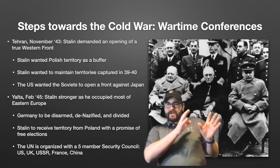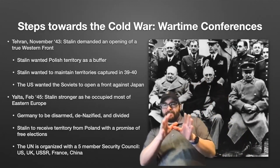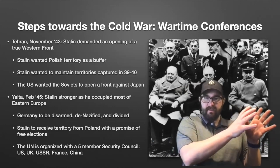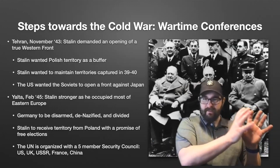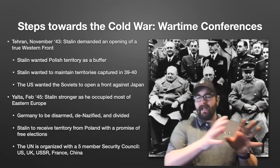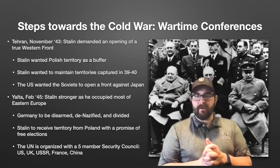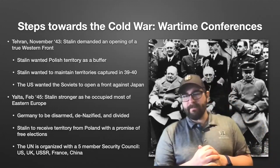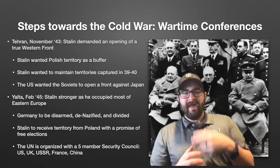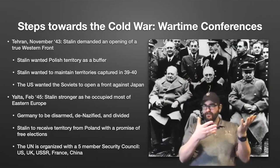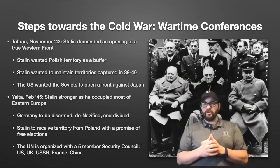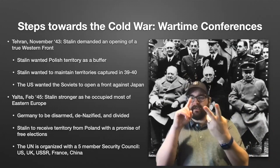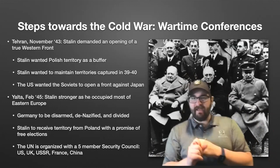We're going to run through a number of steps on how we get from the wartime allies to ultimately a Cold War conflict. We're going to start with our first step: the wartime conferences. The three big conferences to remember — already covered in previous videos on World War II — are Tehran, Yalta, and Potsdam.